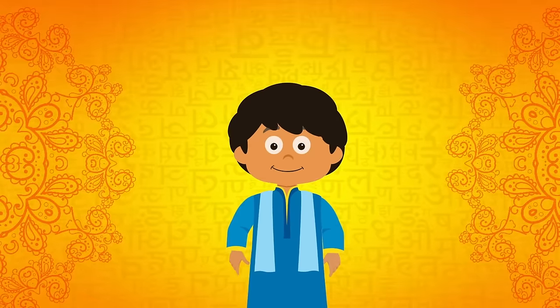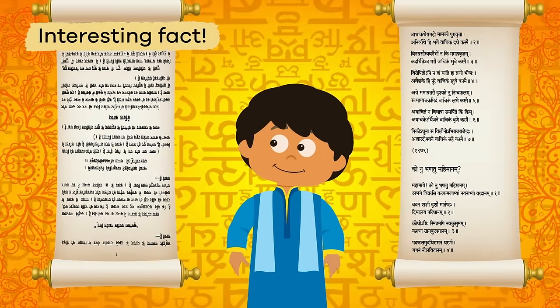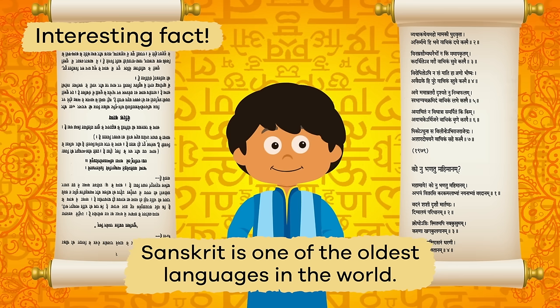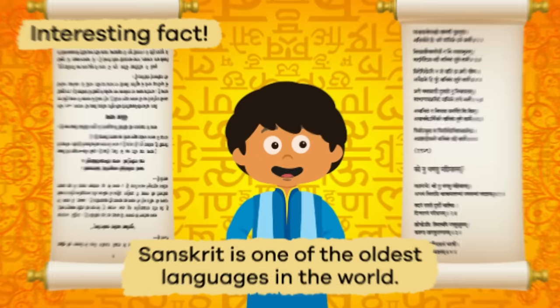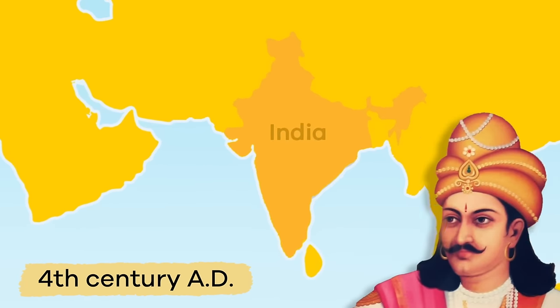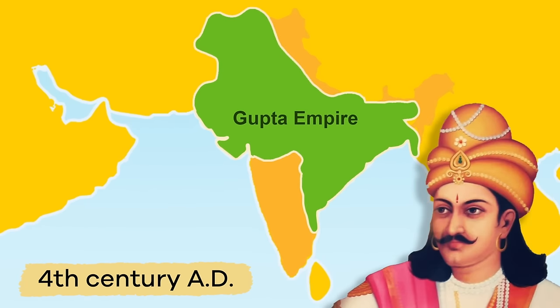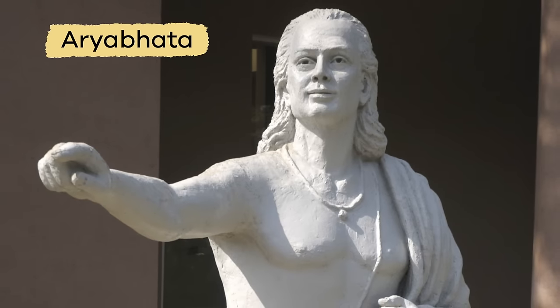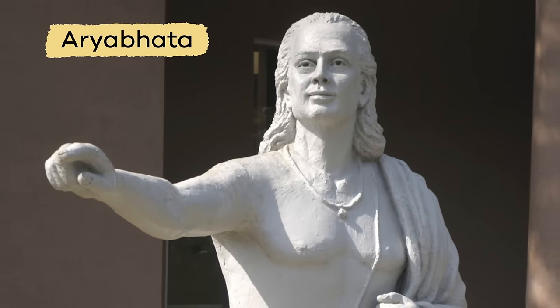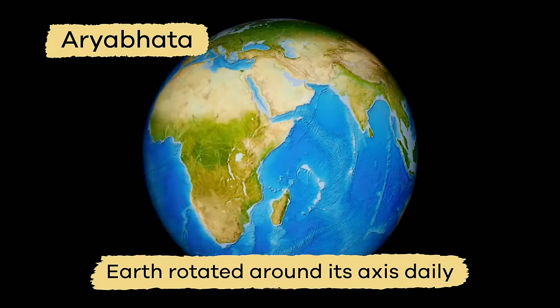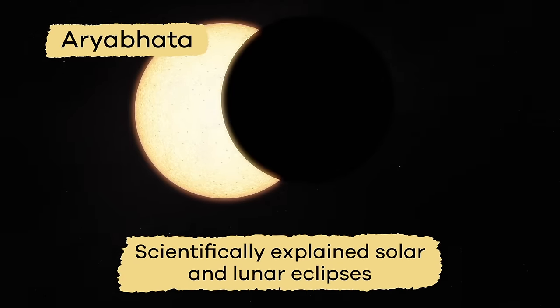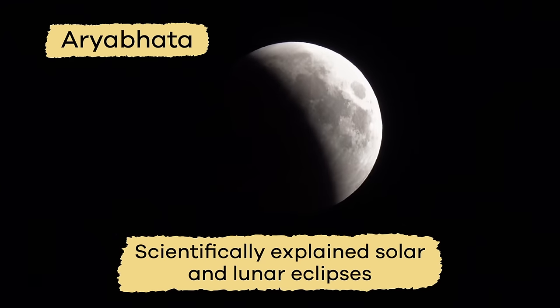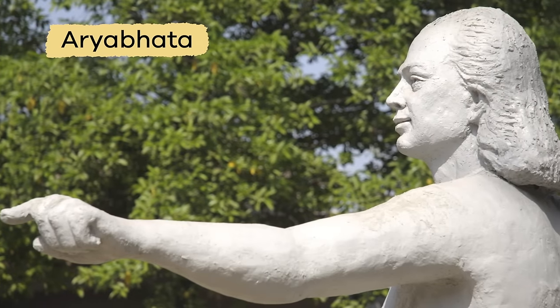Have you ever heard of a language called Sanskrit? Sanskrit is one of the oldest languages in the world. Beginning in the 4th century AD, the Gupta Empire began. Arts, crafts, science, and math all thrived during this time. An Indian astronomer and mathematician named Aryabhata determined that the Earth rotated around its axis daily, and also scientifically explained solar and lunar eclipses. His work would help scientists and mathematicians hundreds and hundreds of years later.